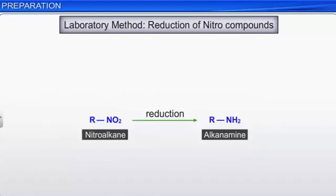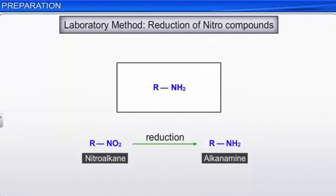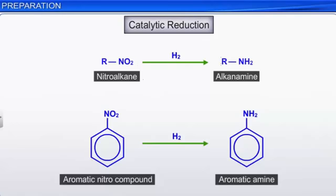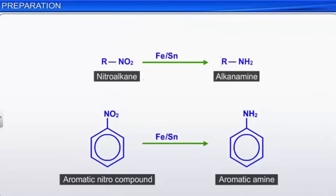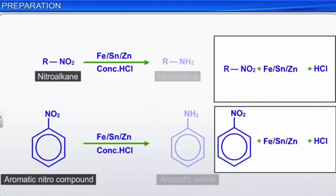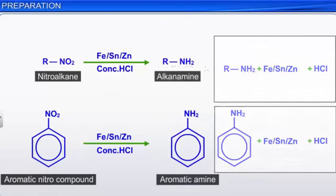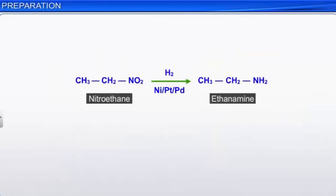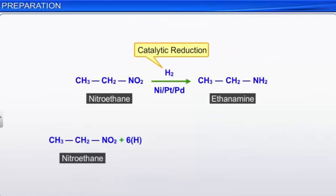The laboratory method for the preparation of amines involves the reduction of nitro compounds. The reduction can be carried out either by catalytic reduction using hydrogen gas in the presence of finely divided nickel, palladium, or platinum, or by using active metals such as iron, tin, and zinc in the presence of concentrated hydrochloric acid. The nascent hydrogen produced by the action of active metals with hydrochloric acid reduces the nitro compounds to amines. Both aliphatic and aromatic primary amines can be prepared this way. For example, nitroethane on catalytic reduction or reduction with tin or iron and HCl gives ethanamine.